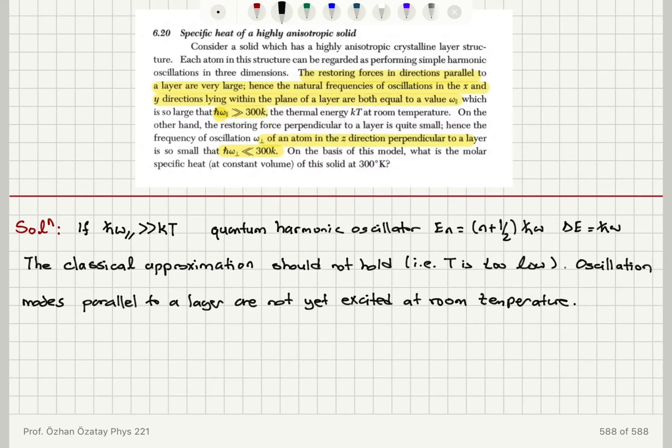So if you consider this classically, the total energy would consist of oscillations px squared over 2m plus 1/2 alpha parallel x squared plus py squared over 2m plus 1/2 alpha parallel y squared. Using equipartition theorem, this would be 1/2 kT times 4 equals 2kT.